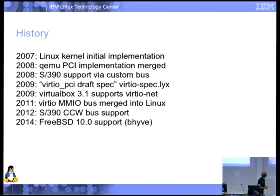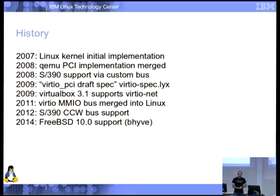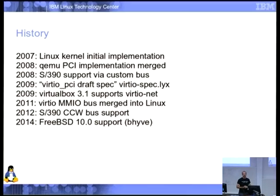Things rolled along for a few years. In 2011 we got the MMIO bus merged into Linux — that's the embedded bus where you don't have PCI and you just have a few descriptors describing what devices you've got; 'bus' is a bit of an overstatement. The year later, the S390 people figured out that the implementation I'd written for Lguest which they'd copied was in fact a terrible idea, and came up with the real CCW bus support, which is much more S390-like.